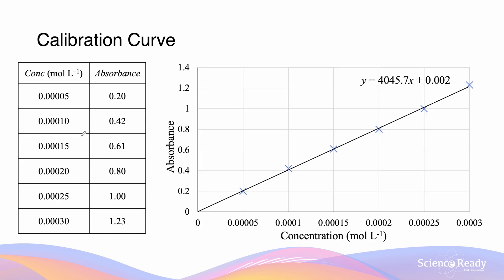In our sample we had six standard solutions. Each of them had concentrations of 0.00005, 0.0001, 0.00015, up to 0.0003 mol/L. When we put these standard solutions into the colorimeter, they provide us with absorbance values. When we plot them onto a graph and draw a line of best fit, we see that the trendline provides us with the formula y = 4045.7x + 0.002, where y is the absorbance value and x is the concentration.